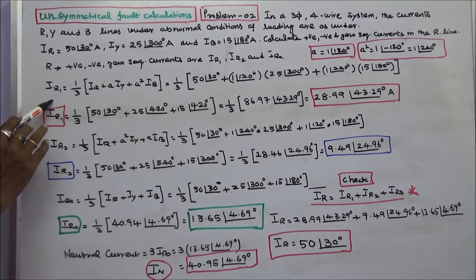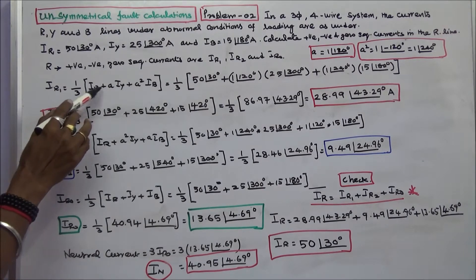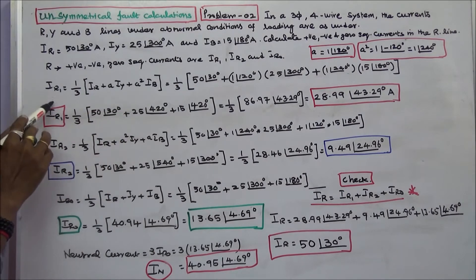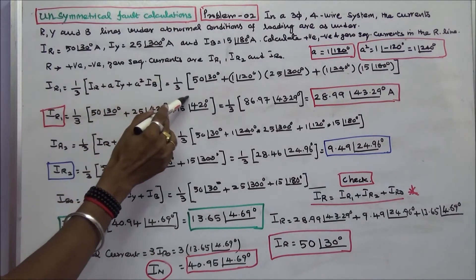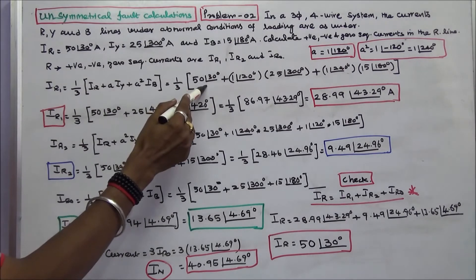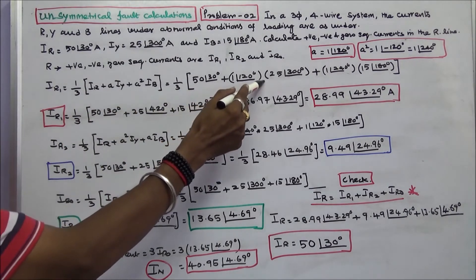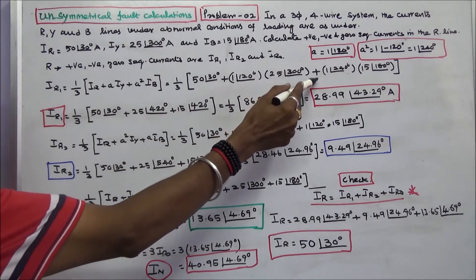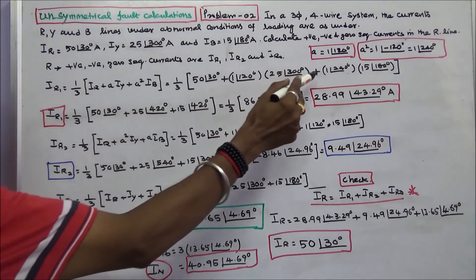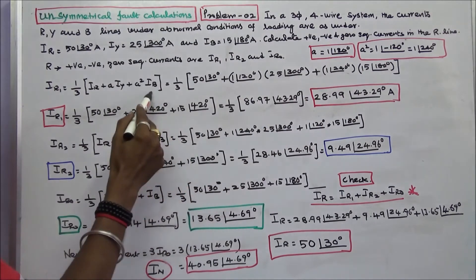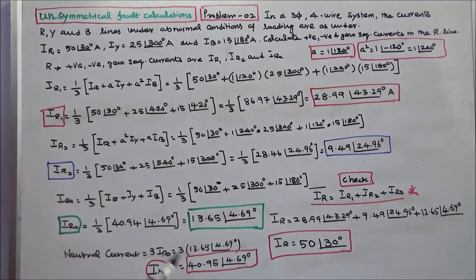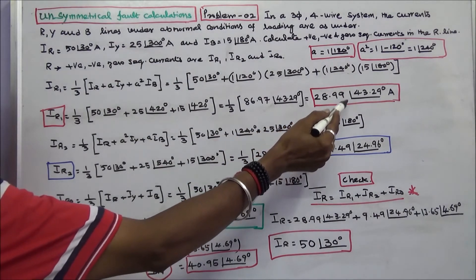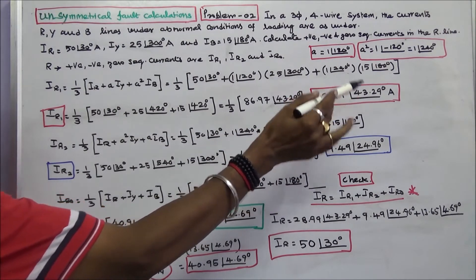IR1 is equal to 1/3 into (IR + A·IY + A²·IB). So IR1 = 1/3 into [50 angle 30 + (1 angle 120)(25 angle 300) + (1 angle 240)(15 angle 180 degrees)]. Therefore IR1 is equal to 28.99 angle 43.29 degrees in amps.